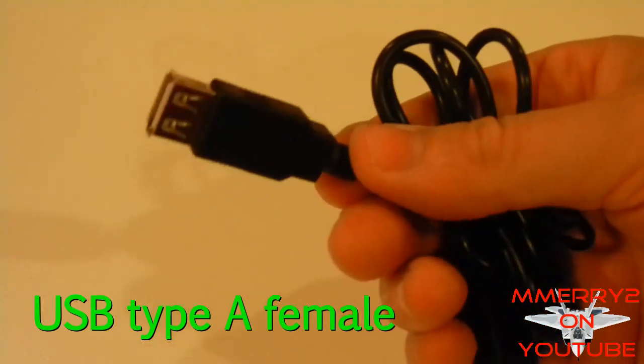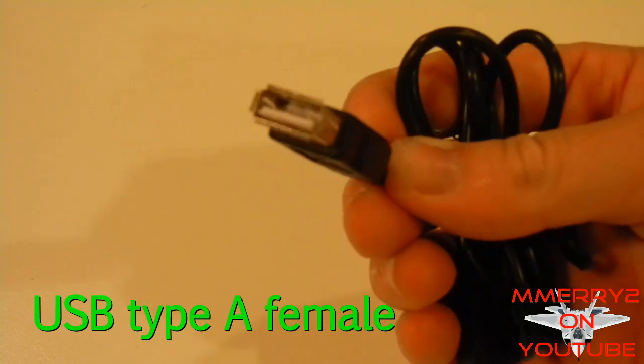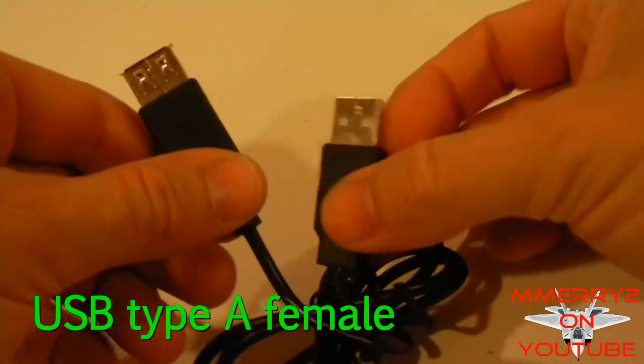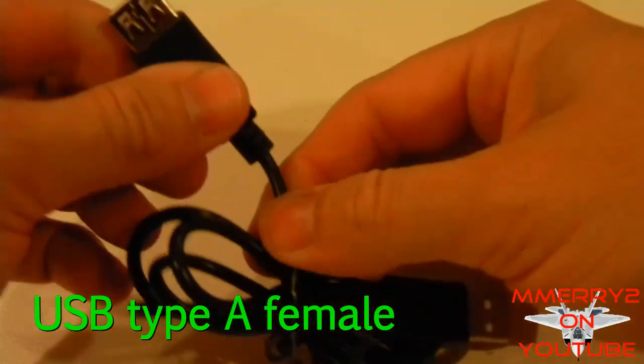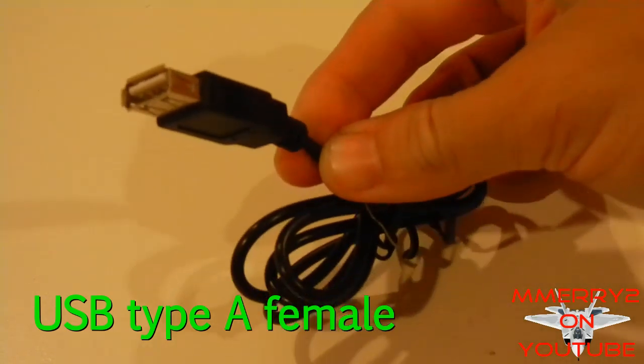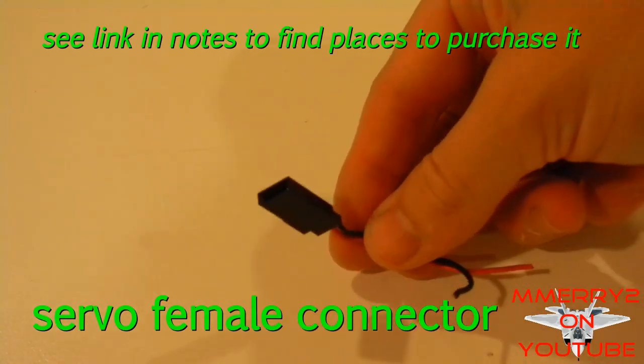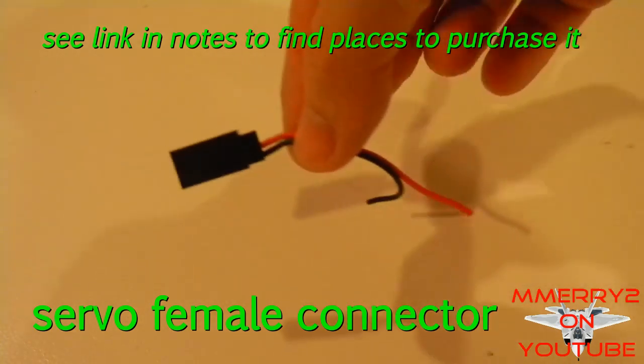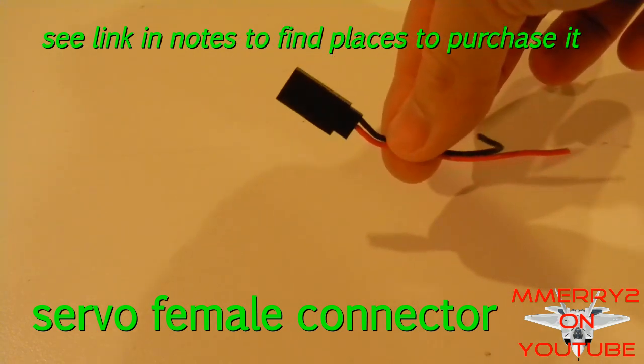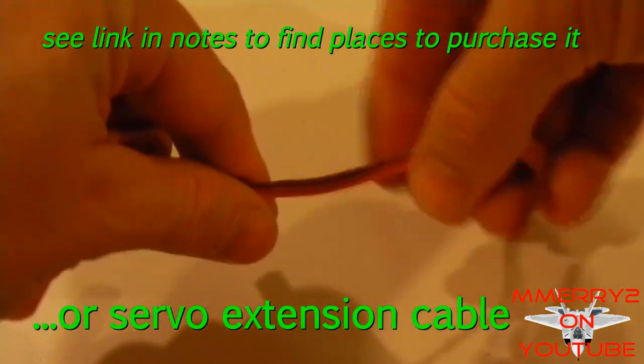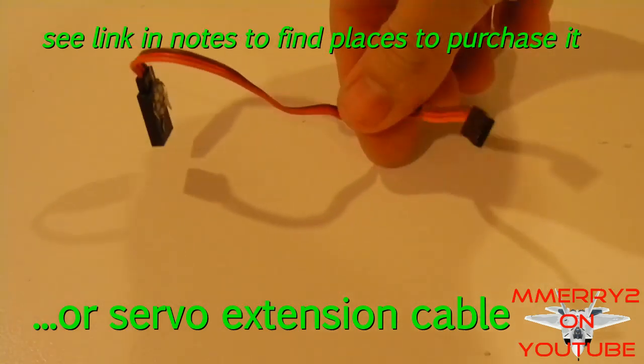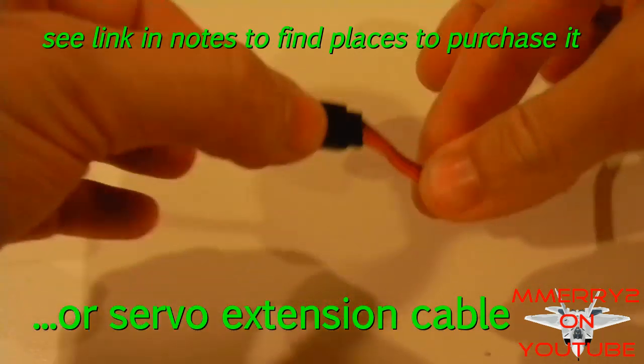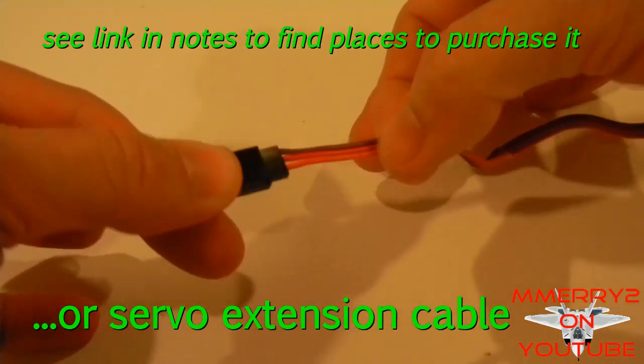You'll need a USB type A female connector. You can use any one that you might have laying around. I just have a USB extension cable and I'm just going to be cutting this female connector off the end. You'll need a servo female connector. If you have just a female lying around, you can use that. You will need wires on the end of it. You could also just take a servo extension cable like this that has a female and a male on the end and just cut off the female end right here. This is the end that you're going to need.